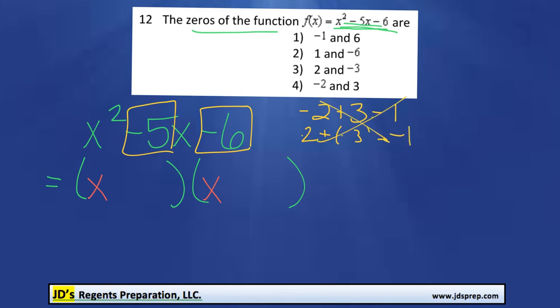So the other two numbers we could multiply to get negative 6 are 6 and 1. In fact, if we had negative 6 and positive 1, we would get negative 5. So those are the two numbers we're looking for, negative 6 and positive 1. I'm going to write them in our brackets here, negative 6 and positive 1.